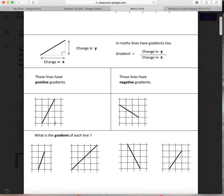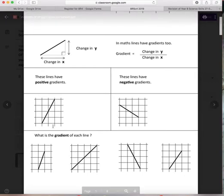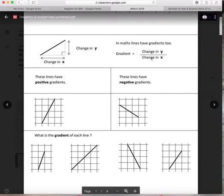You can see it's gone up by one, two, three, four for every two across. So there's four up over two across, which would be a gradient of two, four divided by two, four divided by two.